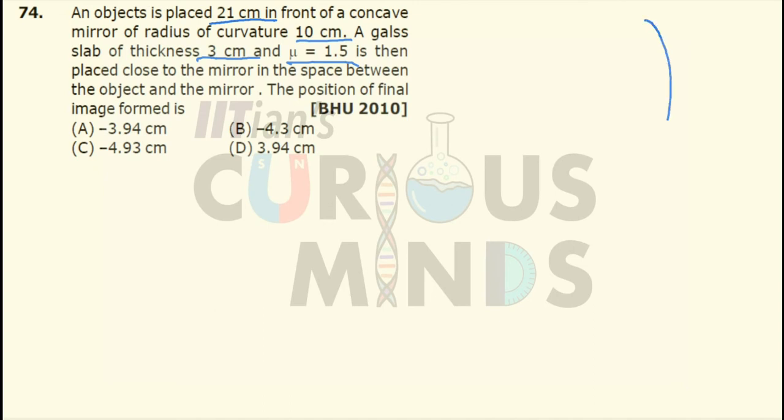Let us say this is a concave mirror of whatever may be the radius of curvature. There is an object placed over here at a distance of 21 cm from the mirror. A glass slab is introduced between the mirror and the object and it is very close to the mirror. Now we have to find out the position of the final image.